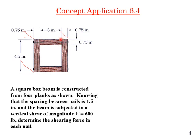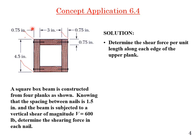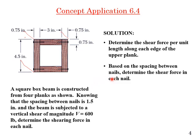This plank is joined over here, and it will try to slip at that location. We are interested in the shear flow on this surface. If we know the shear flow, we can find the shear force on each nail. First, we determine the shear force per unit length along each edge of the upper plank, and then use the nail spacing to find the force per nail.